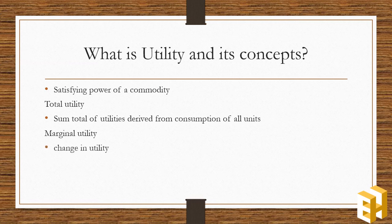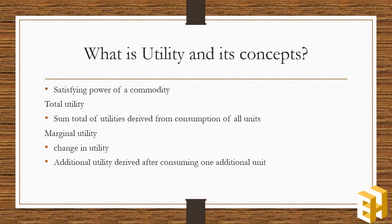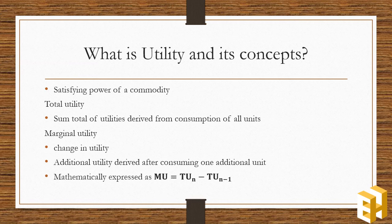It is the change in total utility. Or in simple words, it is the change in total utility achieved by consuming one additional commodity. Mathematically, it is the difference between total utility derived in period n and total utility derived in period n minus one.